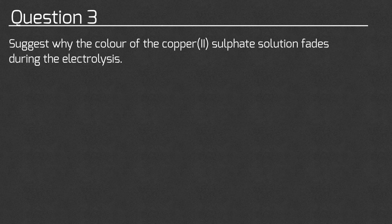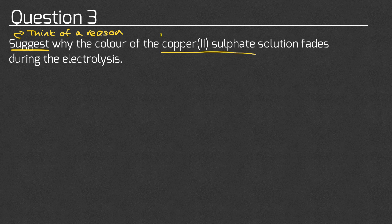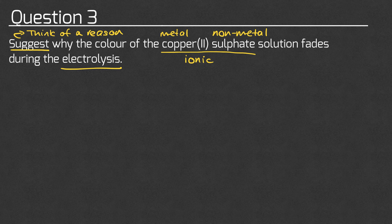Question 3 asks us to suggest why the colour of copper-2-sulfate solution fades during the electrolysis. Suggest means think of a reason — you won't have directly been taught this, you've got to come up with a reason yourself. Copper sulfate is made of a metal and a non-metal, so it's an ionic compound, and we're doing electrolysis. You should know that copper sulfate is blue from the making salts and electrolysis practicals, though the actual colour doesn't matter for this question.